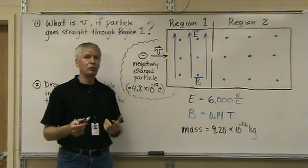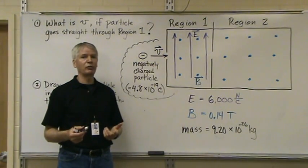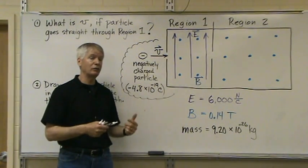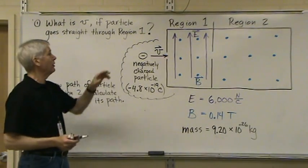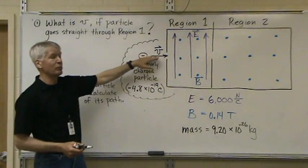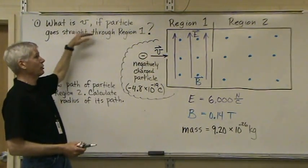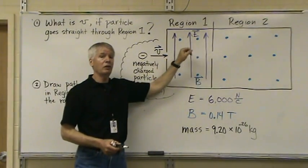So, first let's determine the direction of the forces that each field will apply to the charge, because ultimately we want to figure out what the velocity is that the particle must have in order for that particle to pass straight on through Region 1.